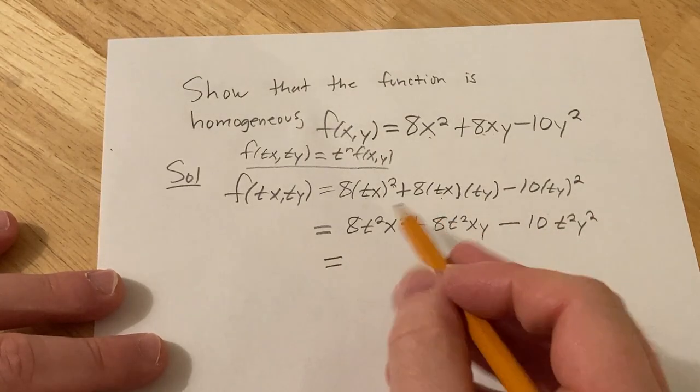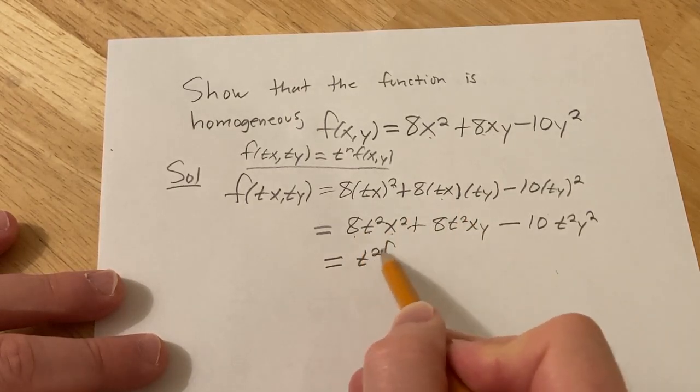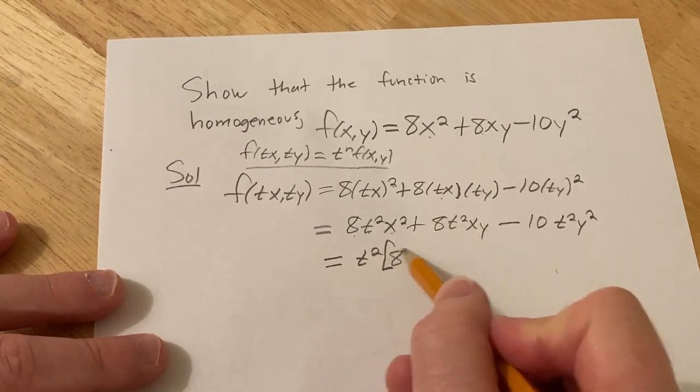This is equal to, so now we can pull out a t squared. So it'll be 8x squared times t squared, this gives us this, so 8x squared.